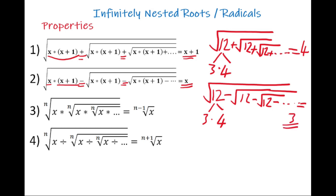We also have a multiplication case. If the root degree is n in all cases and you have a multiplication between the roots, then the result is n minus 1 root of x — we just decrease the root degree by 1. When we have a division between the roots, we increase the root degree, so the result is n plus 1 root of x.